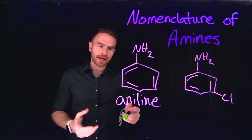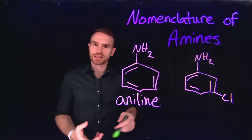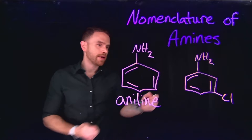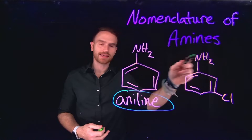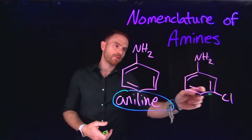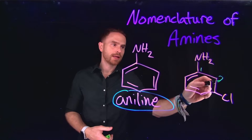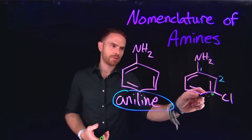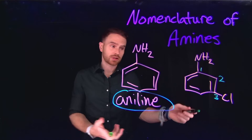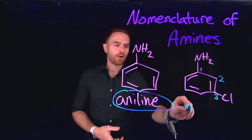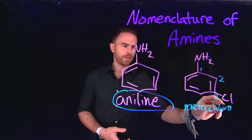Arylamines are typically named after the arylamine aniline. Aniline is a benzene derivative, so we use it as the parent name for any arylamine that contains an NH2 group. For example, in this structure, the primary carbon contains the NH2 group, the second carbon has a C-H bond, and the third carbon has a chloro group. Therefore, I could call this 3-chloroaniline, or I could also call it meta-chloroaniline.